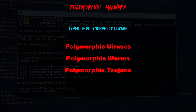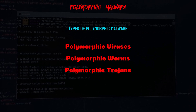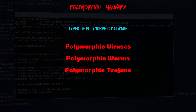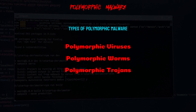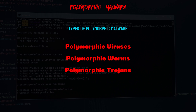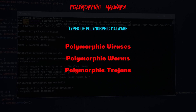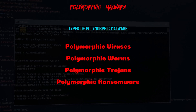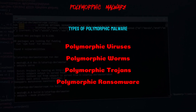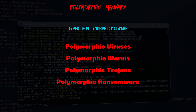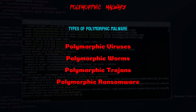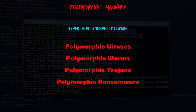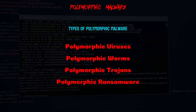Polymorphic trojans can change their code or behavior to avoid being detected by security software. They often disguise themselves as legitimate applications to trick users into downloading and installing them. Polymorphic ransomware can modify its encryption algorithms, communication methods, or other characteristics to bypass security measures and successfully encrypt a victim's data.